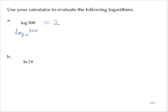So 2.477. One important thing to note is that if we write log of 300, this is considered an exact value. But if I write 2.477, that's an approximation.